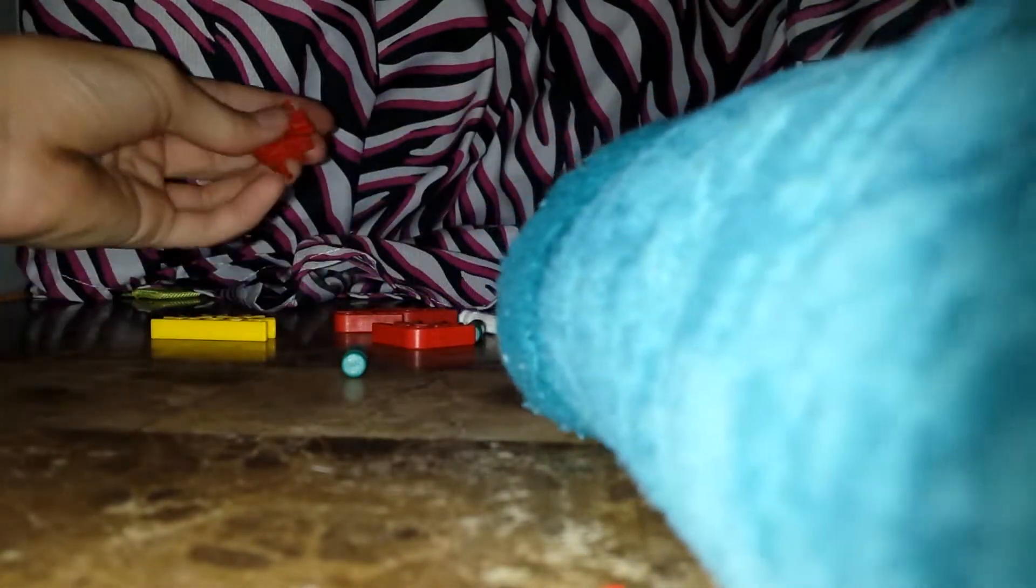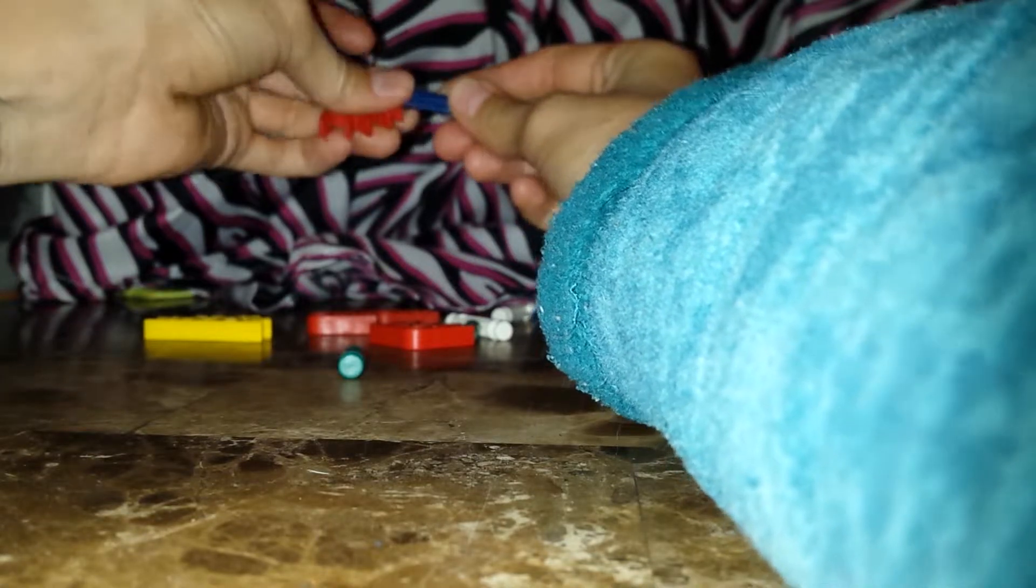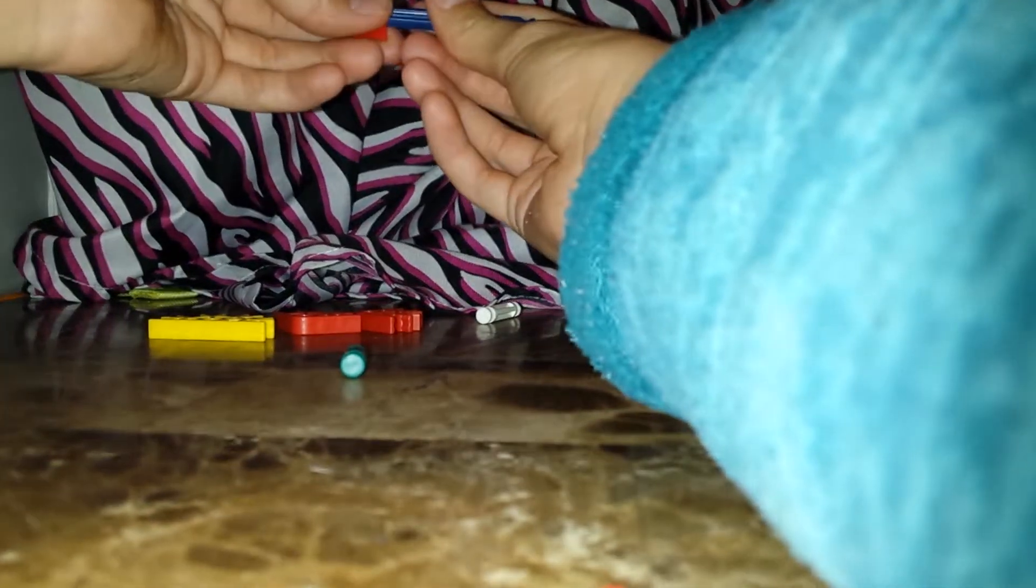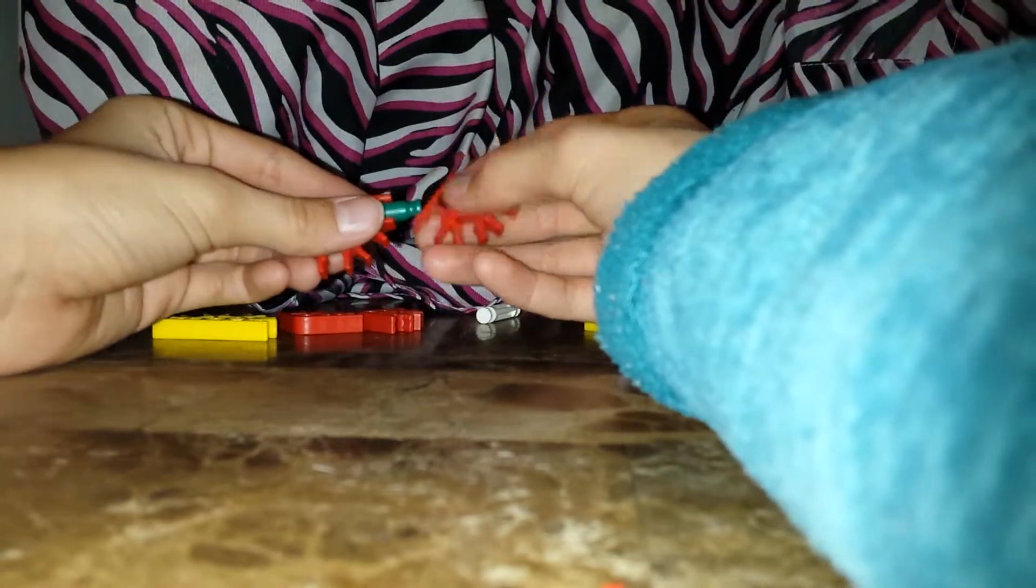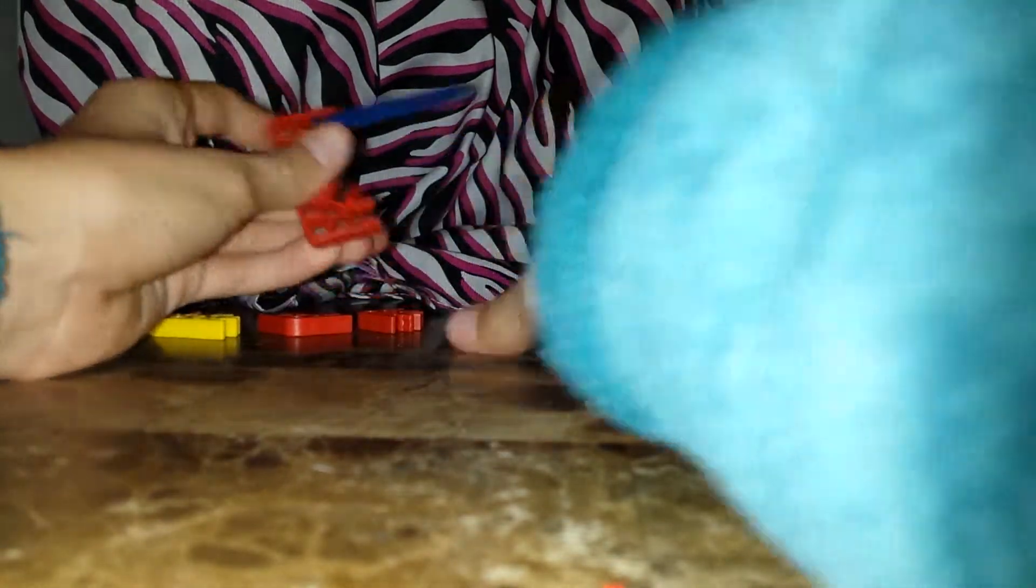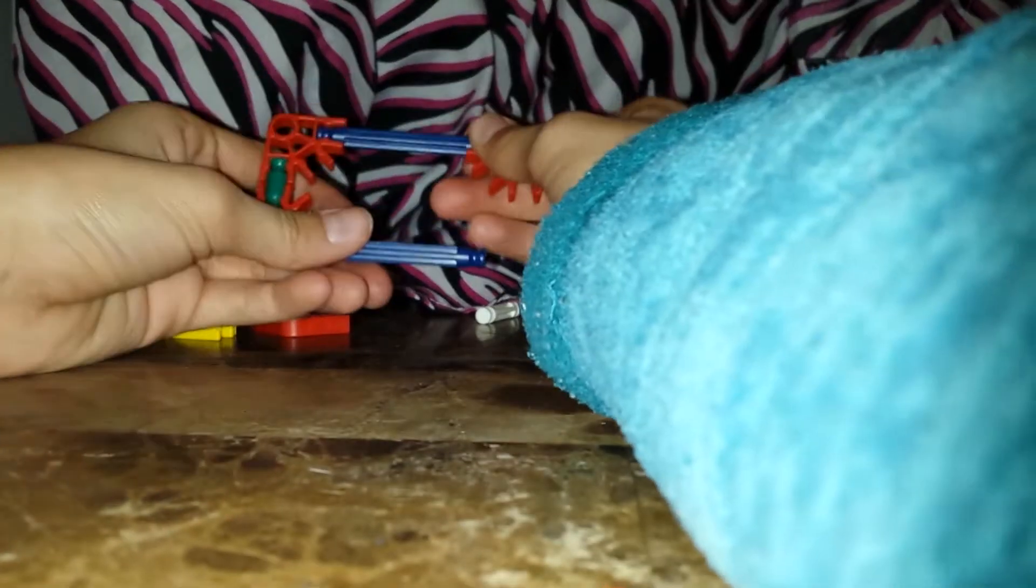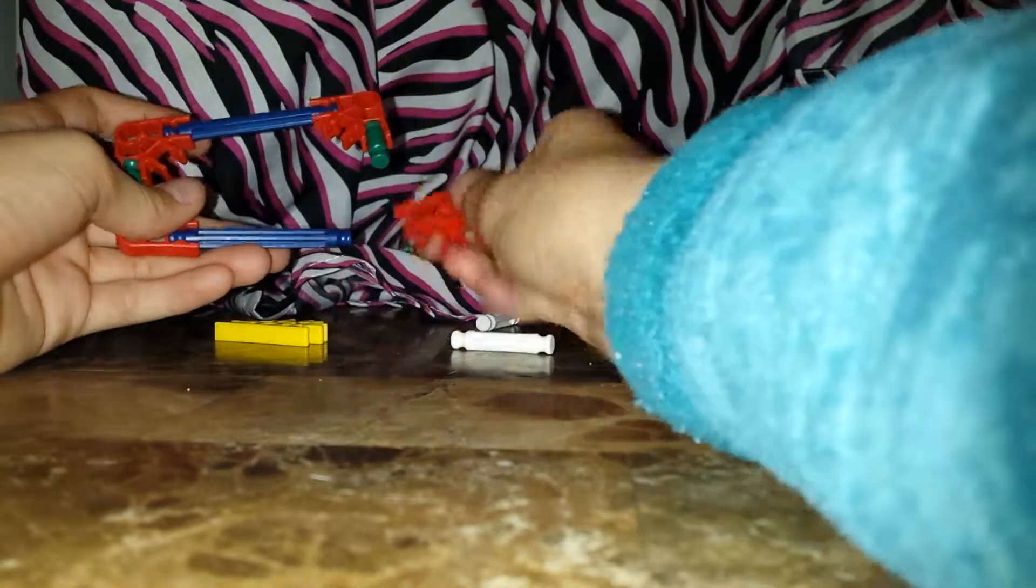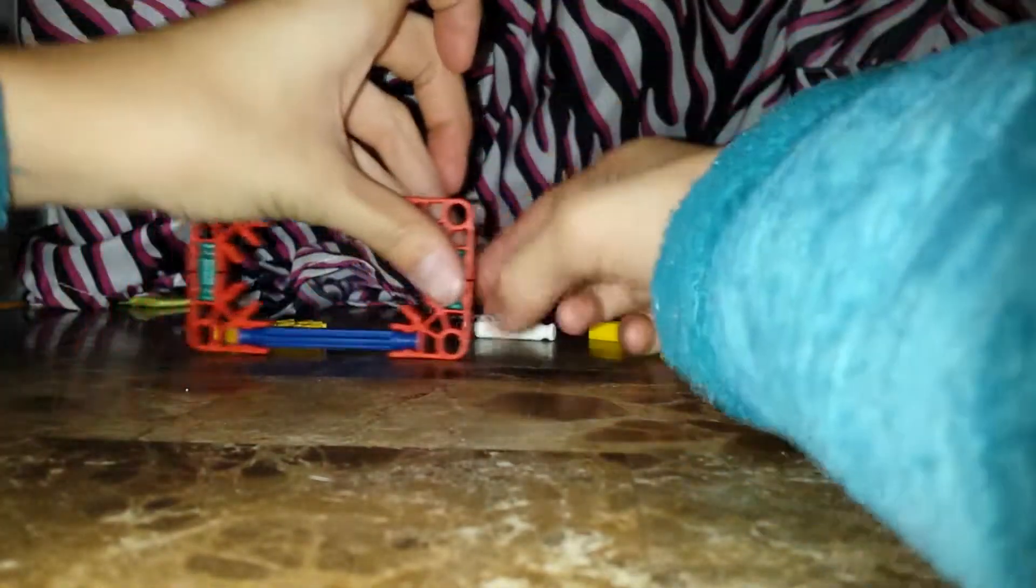So, you're going to start off with the base. I think it's like this. Oh, yeah, I know how to do it again. You put the green one and then the other red one like this. And then you put the blue ones across like this. And then you put that there. Sorry guys, losing some stuff here.